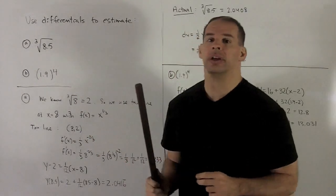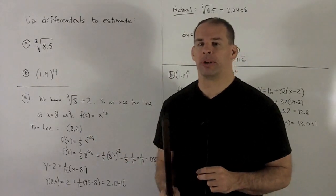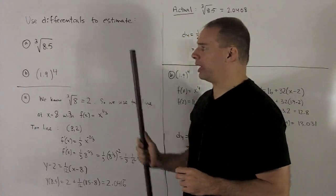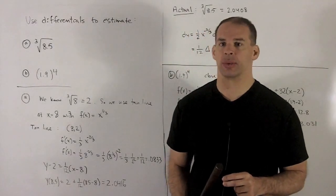we get cube root of 8 equals 2. So we're going to use our point for the tangent line, x equal to 8. Our function is going to be the cube root function, x to the one-third.